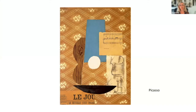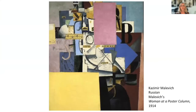Picasso, Braque, and Juan Gris established collage as an artistic practice. In Russia, the art scene was buzzing — significantly, the revolutionary experiments in art were a collaboration between writers and visual artists. Here is Kazimir Malevich, a Russian artist, with his 'Woman at a Poster Column' from 1914, in which he added various words into his collage as well.